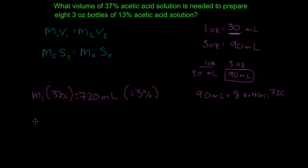Now if we solve for M, we're going to have M1 equals 720 ml times 13% all over 37%. So when you do that in the calculator, that's going to give us 720 times 13 divided by 37. That's going to equal 252.9 milliliters.